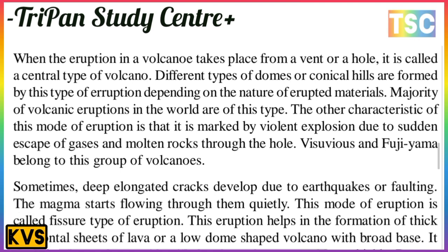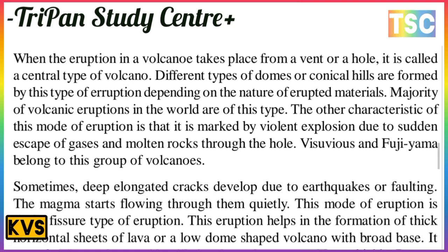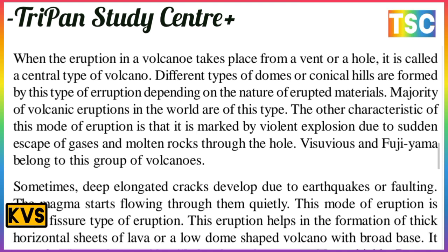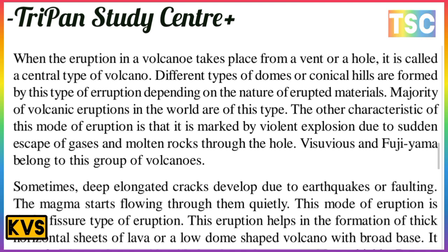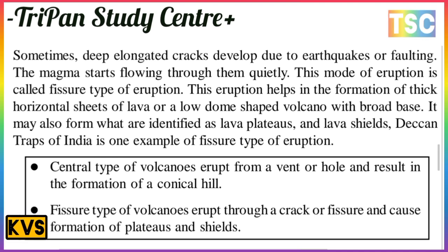In central type volcanoes, different types of domes and conical hills are formed depending on the nature of eruptions. The majority of volcanic eruptions in the world are of this type. They are marked by violent explosions due to the escape of gases and molten rock through the vent. Fujiyama belongs to this group of volcanoes. Sometimes deep-seated cracks develop due to earthquakes and faulting, and magma starts flowing through them quietly. This mode of eruption is called fissure type eruption.